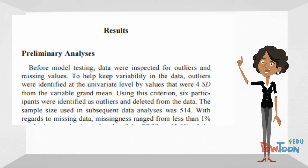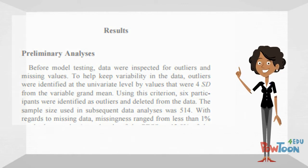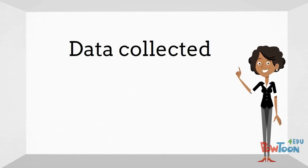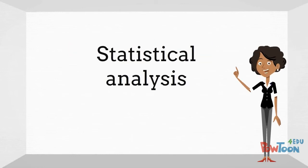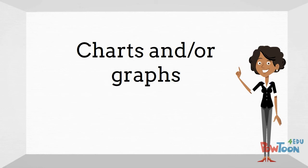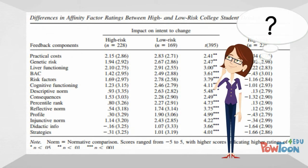In the results section, the author will describe the data they collected as part of their study. They will usually explain the various types of statistical analysis they performed and provide charts or graphs to display the data. This is usually the most difficult section of the article to read.